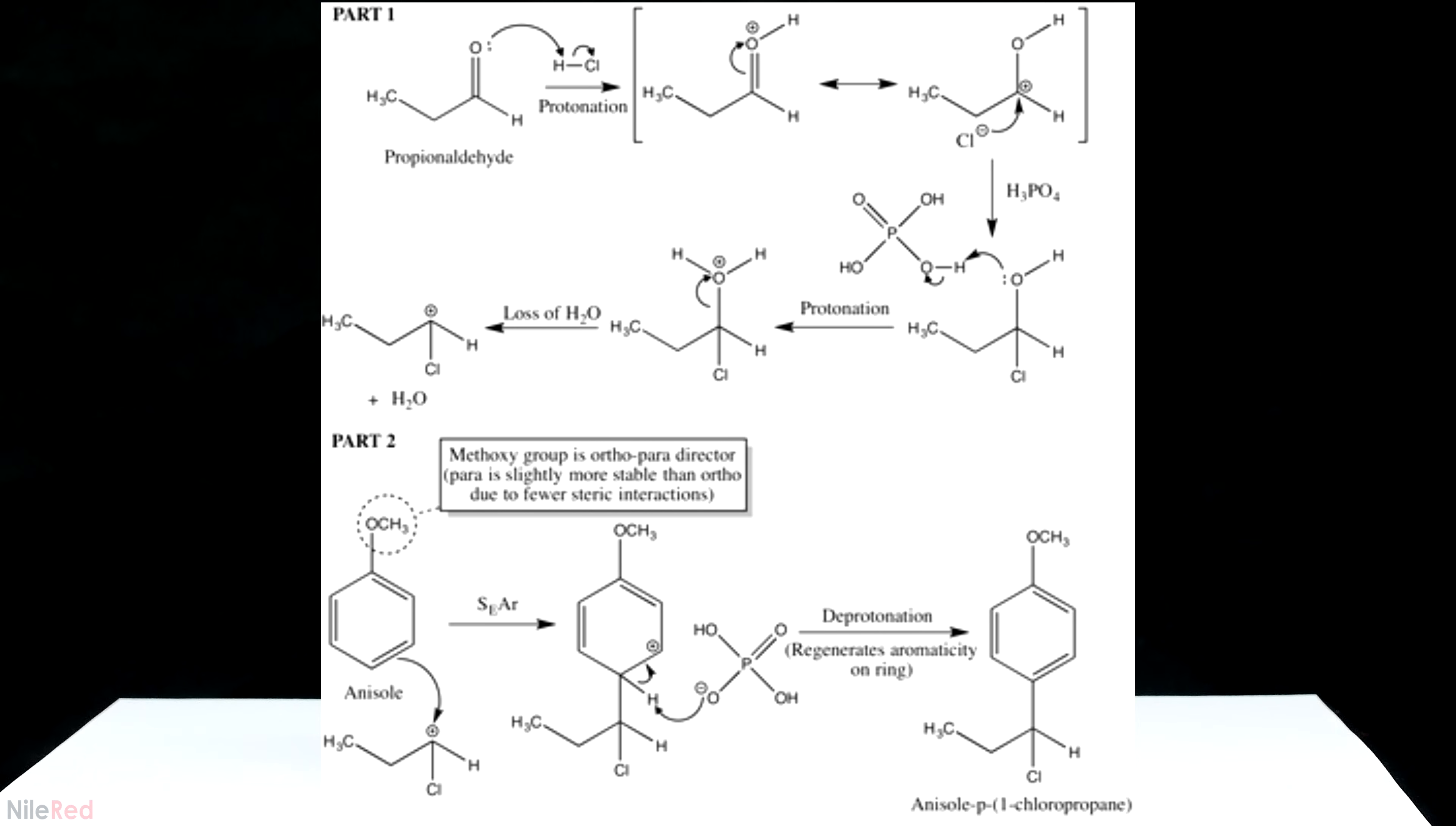There are a few errors in this mechanism, but I'm only going to address what I see as a major problem. In part one, after the loss of water, we form a carbocation, but this is a primary carbocation. Primary carbocations are not very stable, and the likelihood for this to form, especially with an electron withdrawing group like chlorine attached, is extremely low.